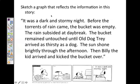Why don't you try to sketch a graph that reflects the information in the story. It was a dark and stormy night. Before the torrents of rain came, the bucket was empty. The rain subsided at daybreak. The bucket remained untouched until old dog Trey arrived as thirsty as a dog. The sun shone brightly through the afternoon. Then Billy the kid arrived and kicked the bucket over. Let's try to make a graph.